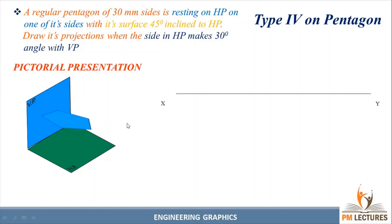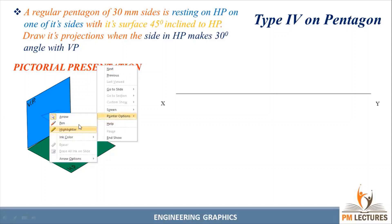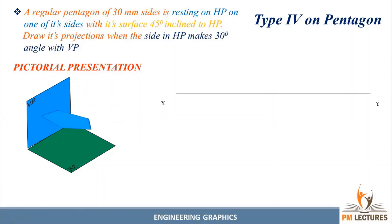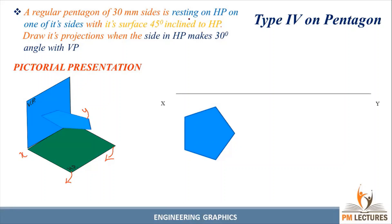If we rotate this plane 90 degrees, we rotate only the HP plane in the clockwise direction, and it will come below the XY line. For drawing the pentagon, you can use a template. For 30 mm each side, we can draw it. While drawing the pentagon, we can draw it in different orientations, but the condition given is that it is resting on HP on one of its sides, so we draw the pentagon with one side as the base.